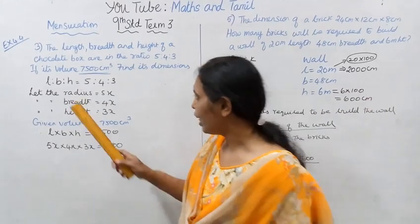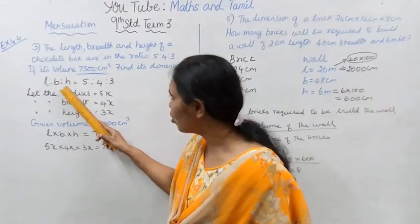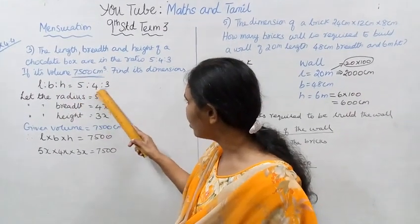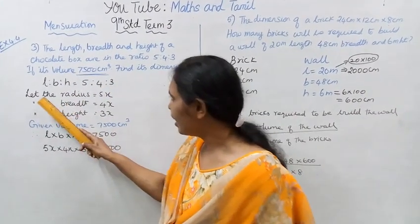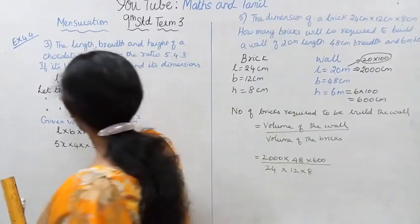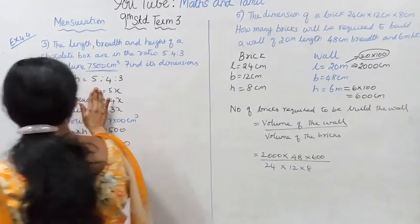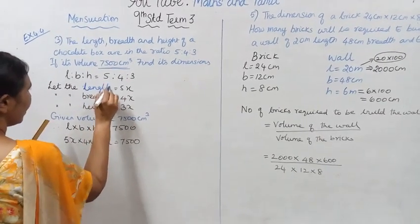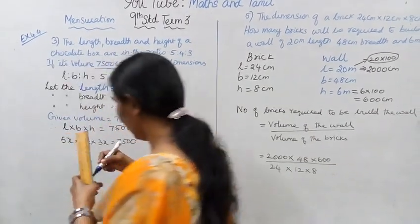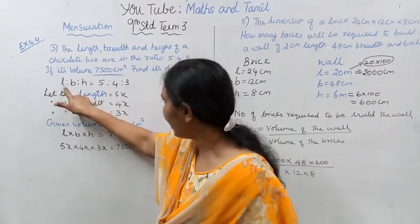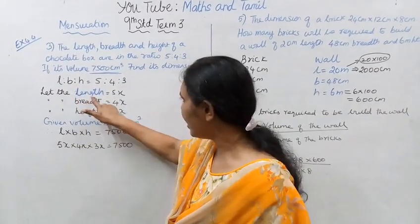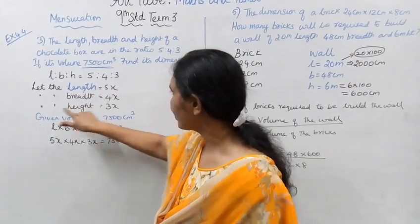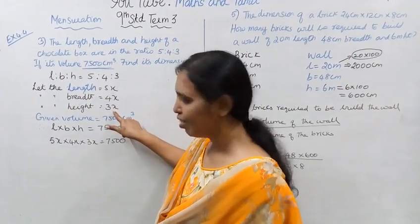Let L:B:H be the ratio. Let the length be 5x, breadth be 4x, and height be 3x.